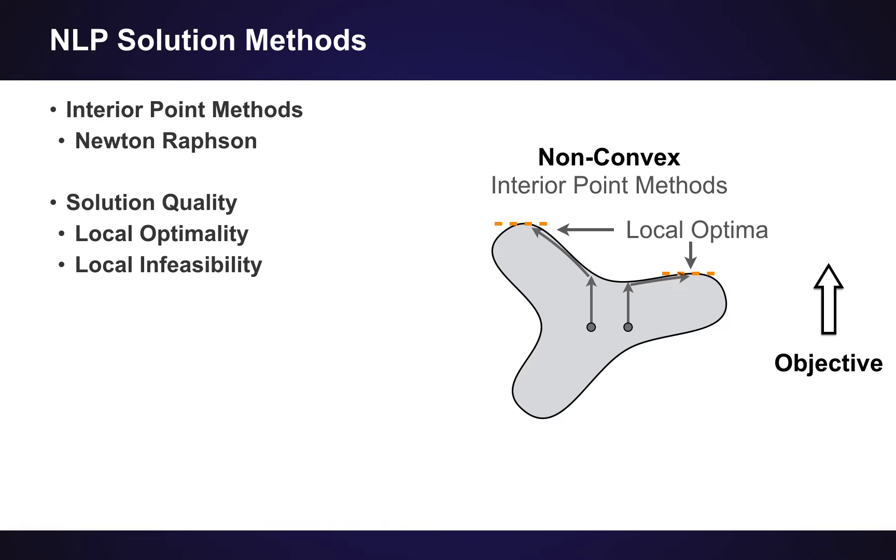Now, it's important to note that these type of methods can be very fast, but they kind of have limited quality in the guarantees they provide you. So they only guarantee that you find a locally optimal solution, and if they get an infeasible point, they only guarantee local infeasibility. So it's not a proof that your whole problem is infeasible.